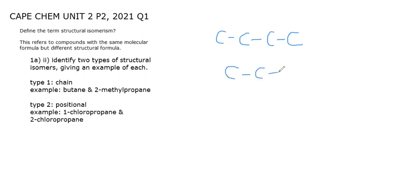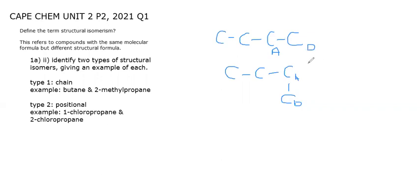Since this is chain isomerism, we must rearrange the carbon atoms. Rearranging does not mean just changing the shape — this is not an isomer. I'm going to label this carbon B and this carbon A. Notice carbon D and carbon A are attached, so even though they appear different the connectivity is the same. For chain isomerism, the connectivity — how the atoms are connected — must be different, which means carbon A and D should not be attached to each other.